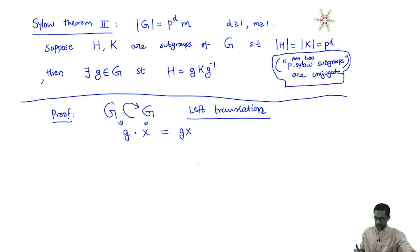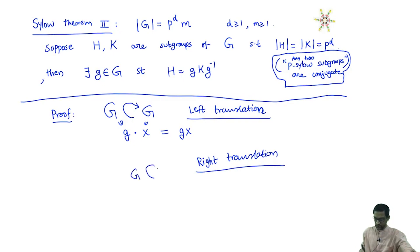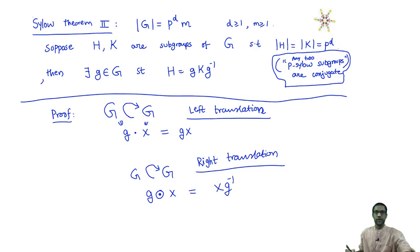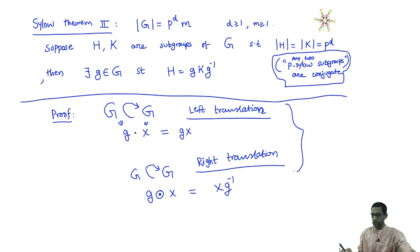Similarly, there is an action by right translation, and if you recall this involves a little twist. G acts on G as follows: G acting on X by right translation means you multiply G inverse on the right. It is important to put the inverse; otherwise this does not satisfy the compatibility axiom for an action. So there are actually two translation actions — the left translation and the right translation action of a group G on itself.